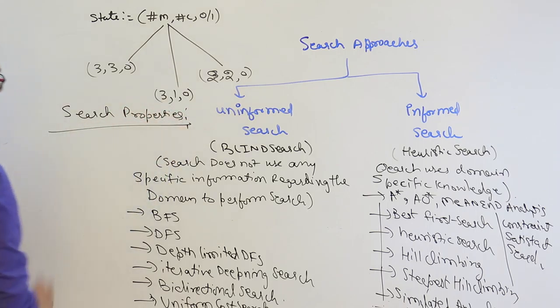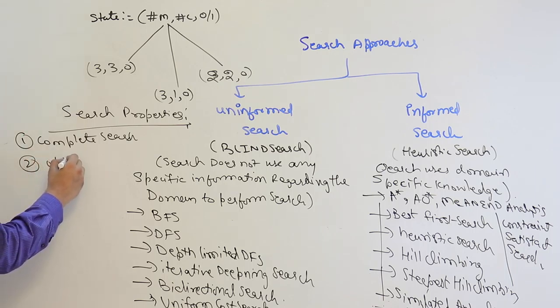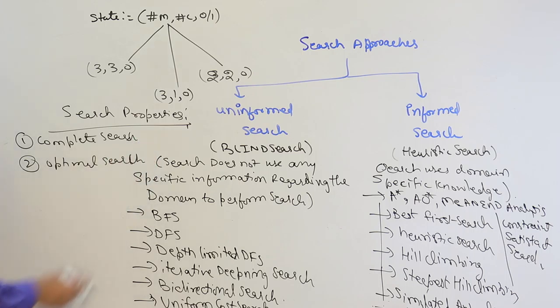So we are going to study these algorithms. In the case of heuristic search, these are the algorithms we'll be studying; and in the case of blind search, these are the algorithms we'll be studying. Apart from this, for game search there is min-max search, alpha-beta pruning, two-player games, etc.